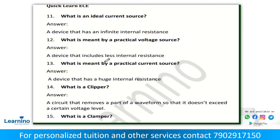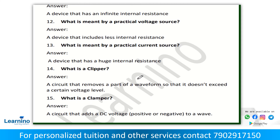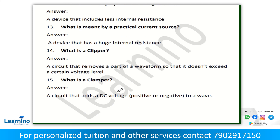Question number 13: what is meant by practical current source? A device that has a huge internal resistance. Next question: what is a clipper? A circuit that removes a part of a waveform so that it does not exceed a certain voltage level. And next: what is a clamper? A circuit that adds a DC voltage, positive or negative, to a wave.